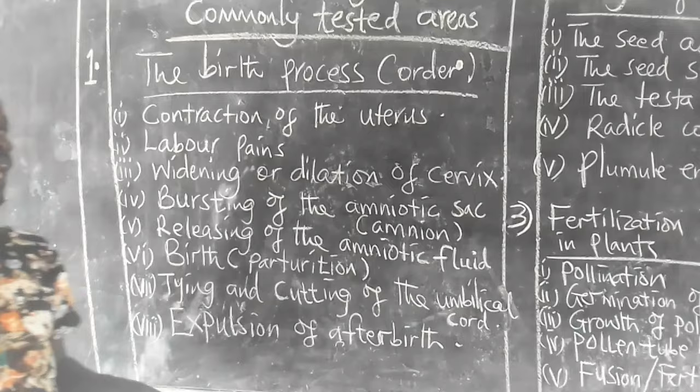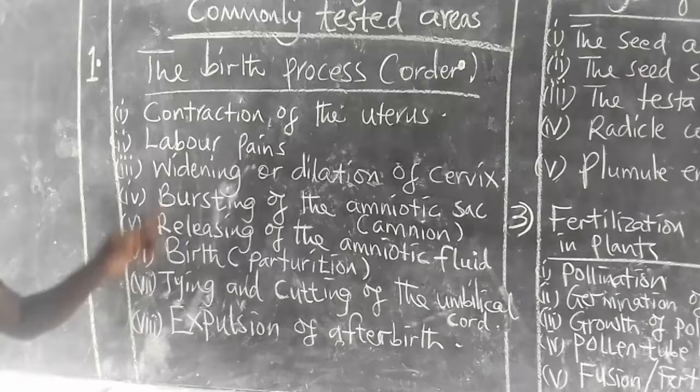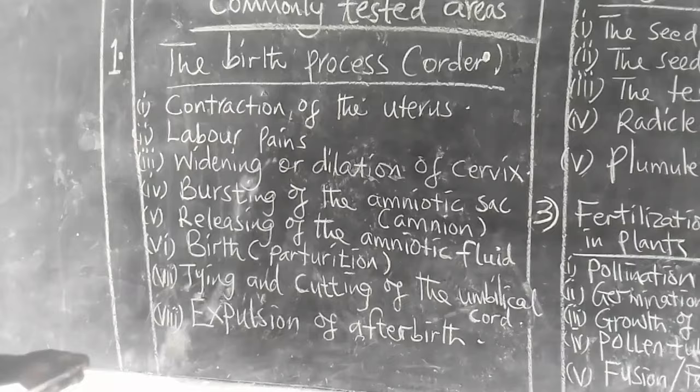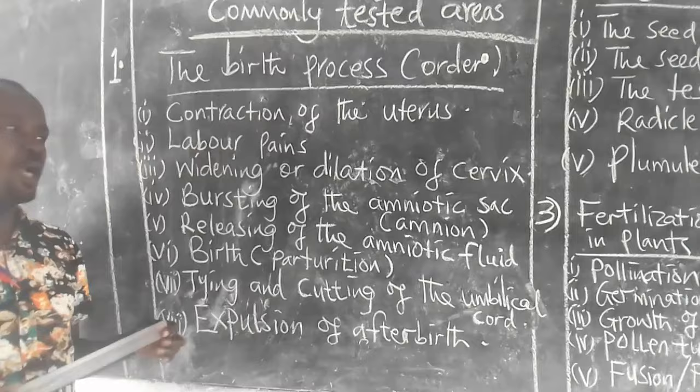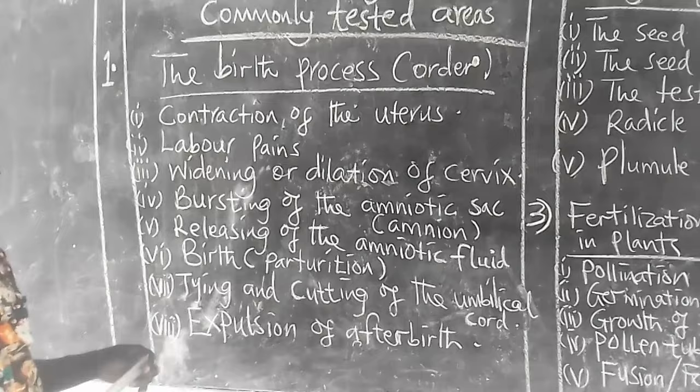I repeat the birth process order: contraction of the uterus, labor pains, widening or dilation of cervix, bursting of the amniotic sac, releasing of the amniotic fluid, birth, tying and cutting of the umbilical cord, expulsion of afterbirth.